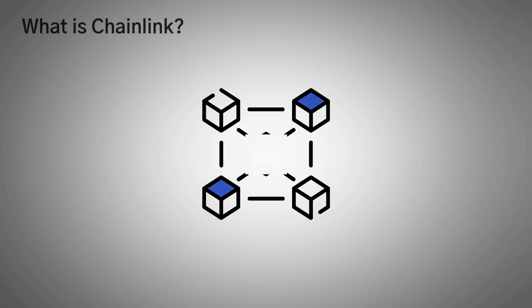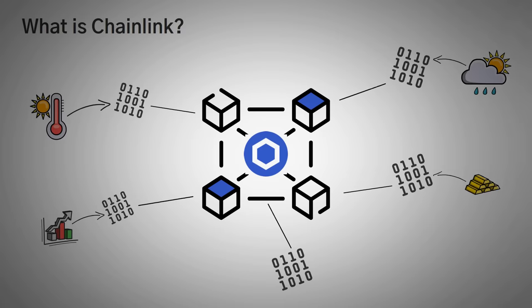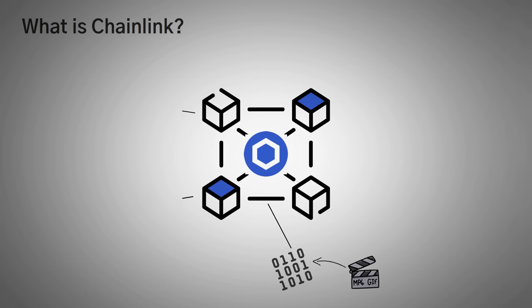Moving on, what is Chainlink? Well, Chainlink is a decentralized network of oracles that provide data from off-chain sources to on-chain sources and vice versa. It allows smart contracts to access real-world information that exists outside of the blockchain in a secure manner. Now, Chainlink also tackles the reliability problems associated with using a centralized data source, but we'll get to that in a little bit.